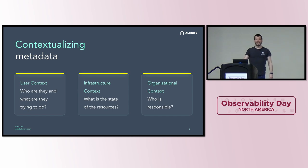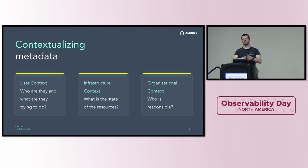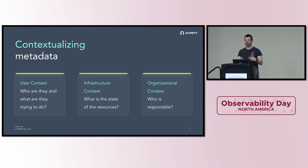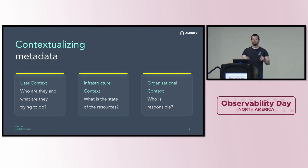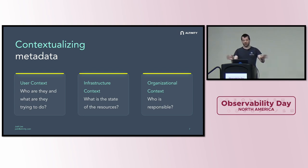And then, maybe aspirationally, there's organizational context — taking observability to the next level. If we can add metadata about who within our organization is responsible for a specific thing, that's really valuable, and we're never going to get that automatically. But if our organizational context aligns with our infrastructure context, we can automate it at the infrastructure level. If teams share infrastructure, you'll have to get into grittier annotations.